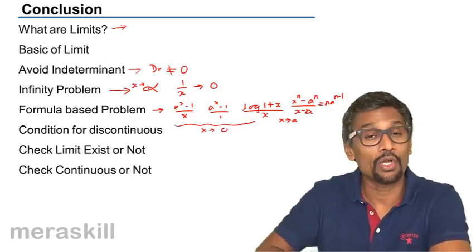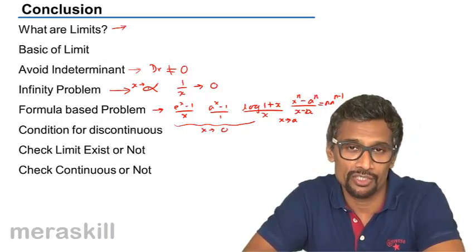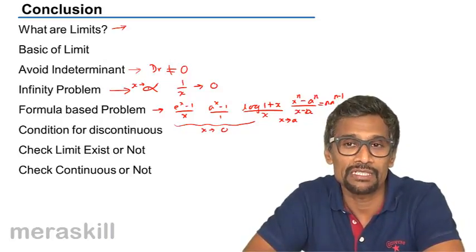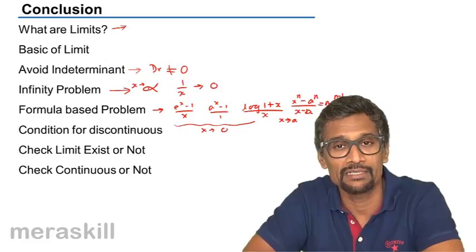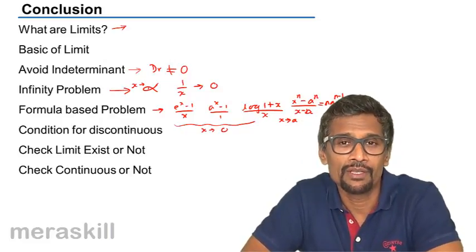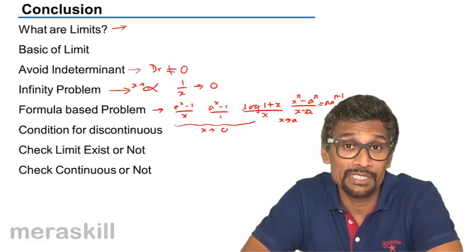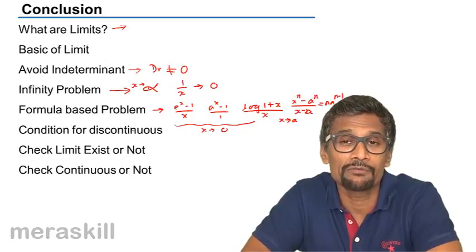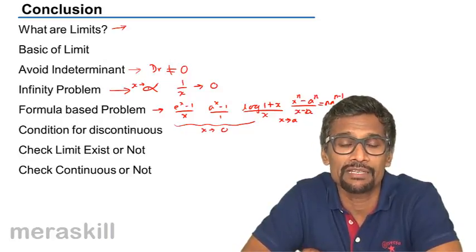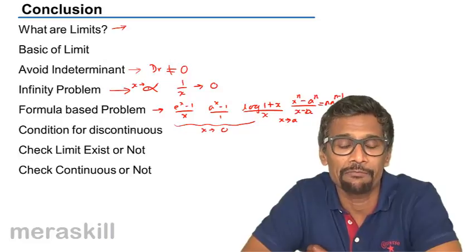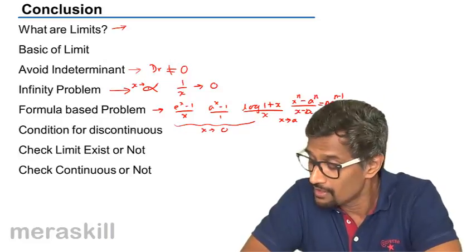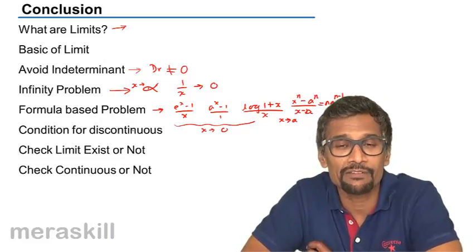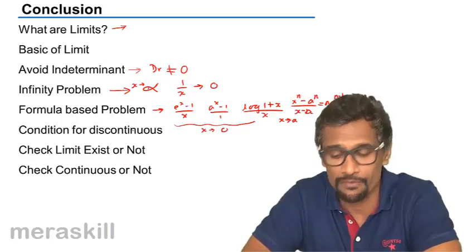Then we took up the concept of conditions for discontinuity. The value of the function for a particular value of x—only when the left-hand limit, right-hand limit, and f for that value of x are equal, we say that the particular function is continuous at that particular point.